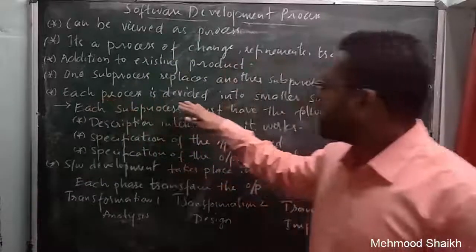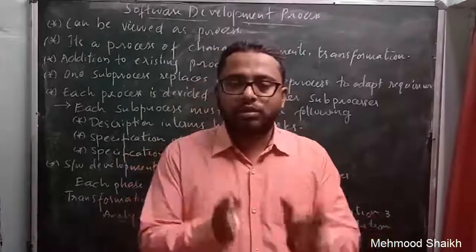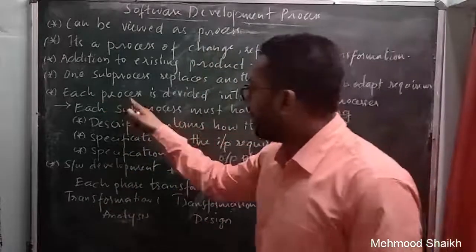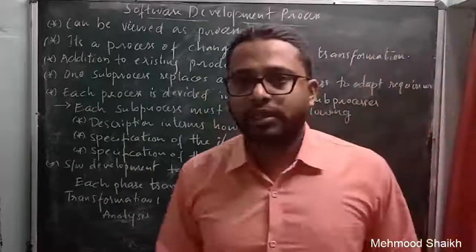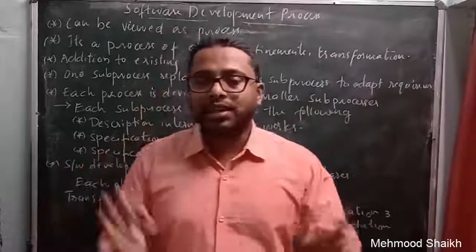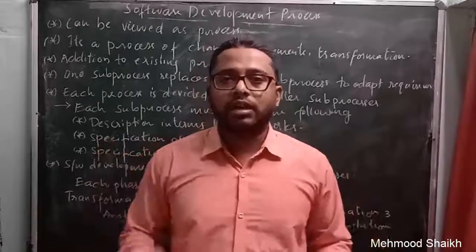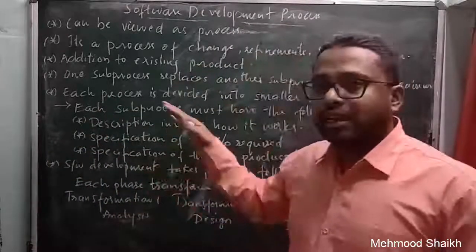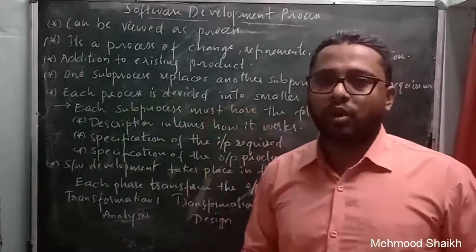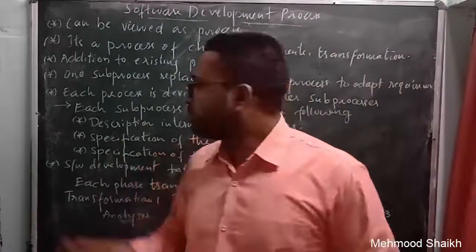The next point is: each process is divided into smaller sub-processes. To deal with a large problem more easily, the development team divides the entire process into smaller sub-problems and starts developing solutions for each one. Once solutions are found for all sub-processes, they combine the results to make a larger system. This approach is called divide and conquer.